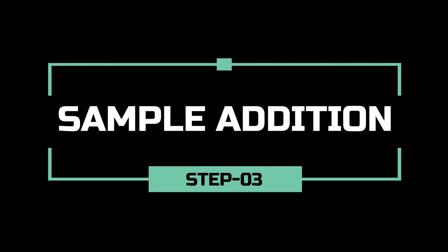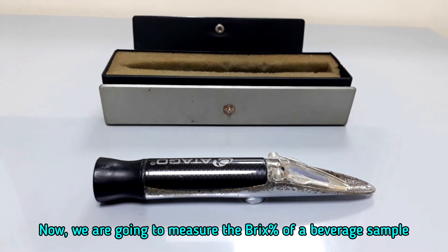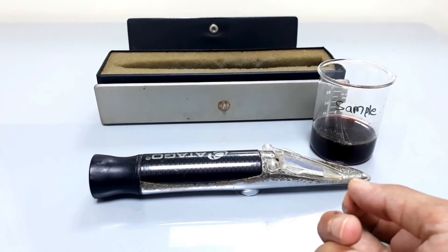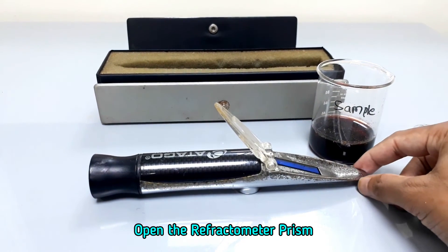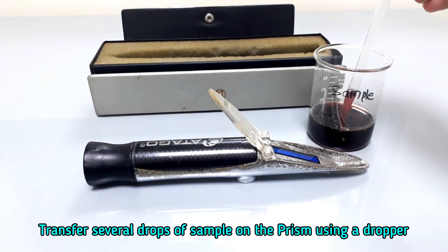It is the time to test our sample. We are going to measure the Brix percentage of a beverage sample. Bring the sample maintained at 20 degrees Celsius. Open the refractometer prism and transfer several drops of sample on the prism using a dropper.